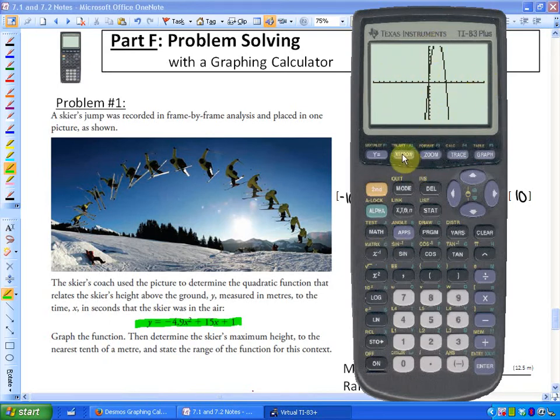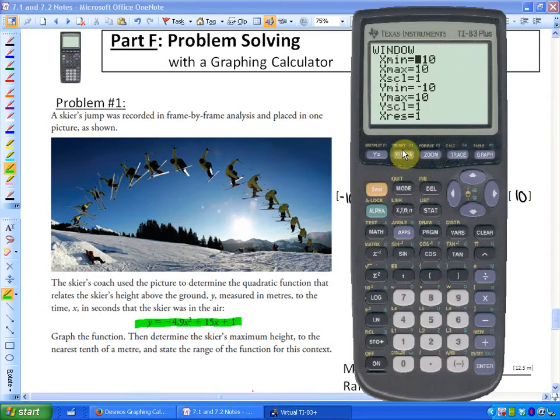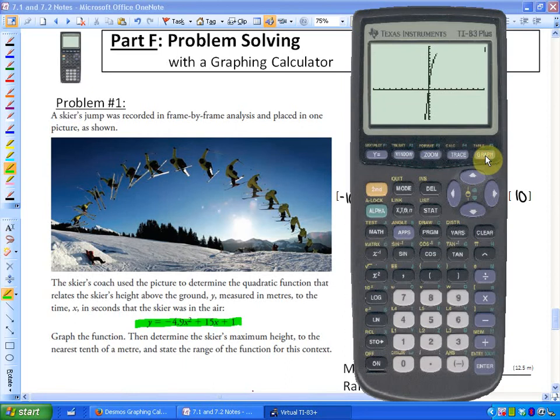In order to change this window or what you're seeing because right now we're seeing from negative 10 to positive 10 on each axis you can press window and since we want to see higher up that would be right here the y maximum. Since we want to see further up on that axis I'm going to change that value to 15 and see if I can see the top of the jump. So once you've changed your window or altered any of those values press graph again and as you can see I can see the top of the skier's jump.